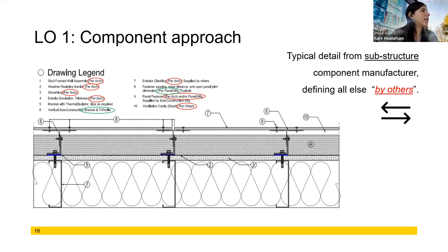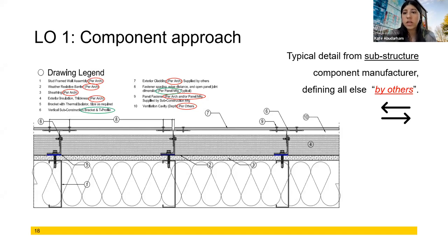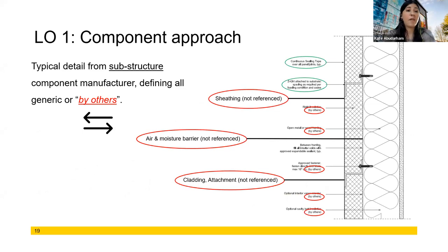They're not even taking responsibility for the one thing they should own. Sub-construction is meant to anchor the facade panels to the wall, and to create space to accommodate the rain screen gap as well as the insulation. But call-out number eight says 'fastener spacing, edge distance, and open panel joint dimension per panel manufacturer.' No — you are the ones with the load table and carrying that load. You should be doing the calculations and saying for this particular facade panel you need X number of brackets per square foot. Instead they're foisting that responsibility on you and likely a very costly engineer.